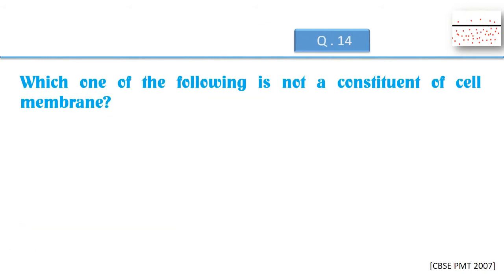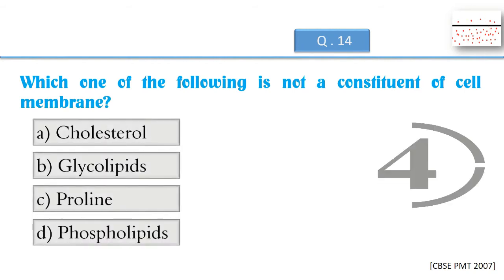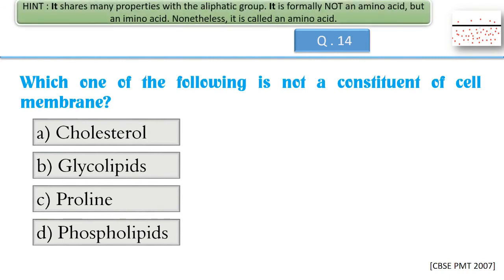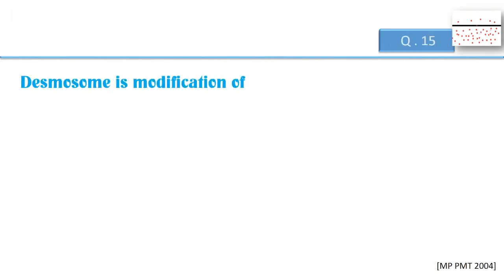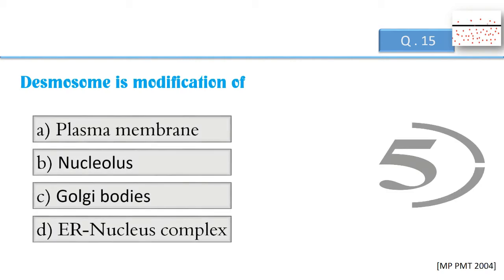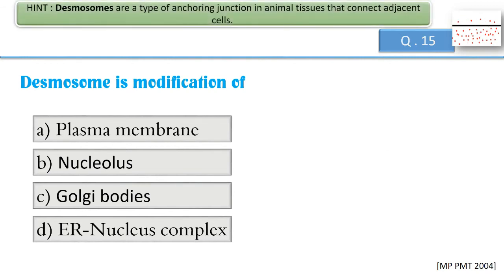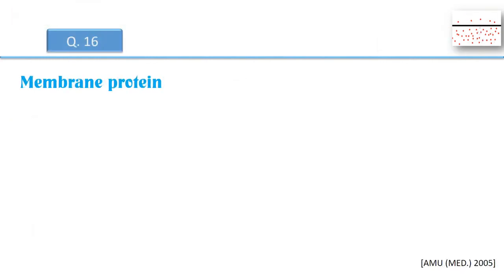Which one of the following is not a constituent of cell membrane? Desmosome is modification of? Membrane protein?